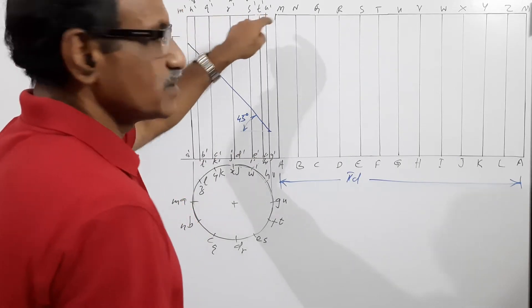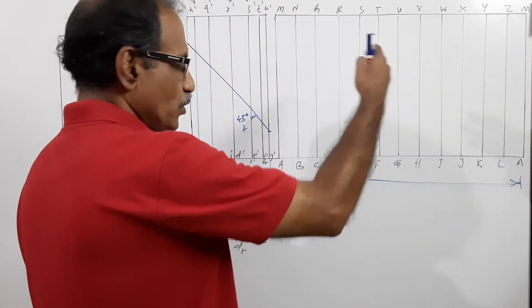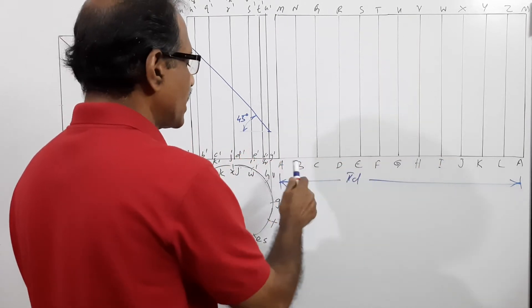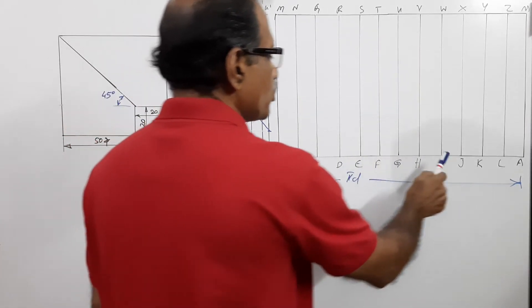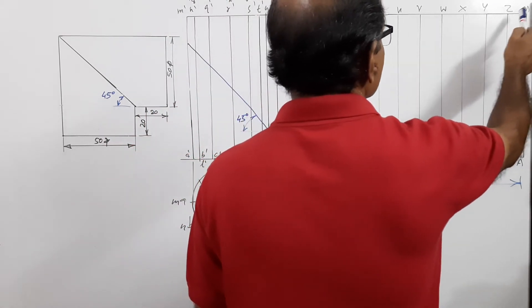Those points are marked in the elevation at the bottom and the top and if you draw the development, you have to divide it into 12 equal parts and mark A, B, C, D up to L, A, M, N, Q, R, S, T, U, V, W, X, Y, Z, M.